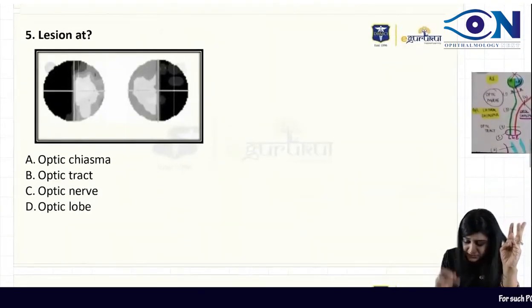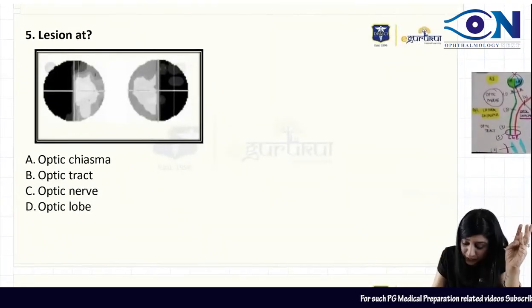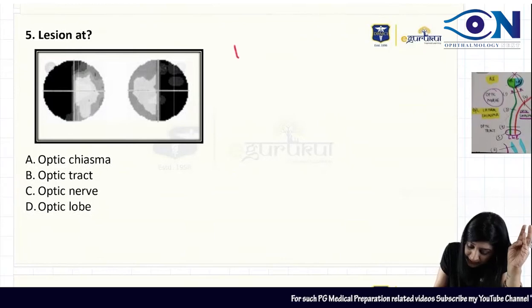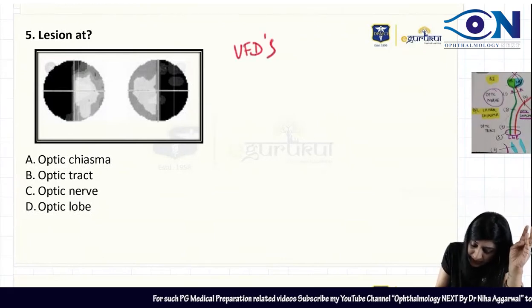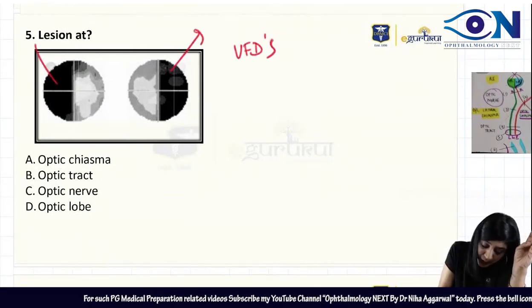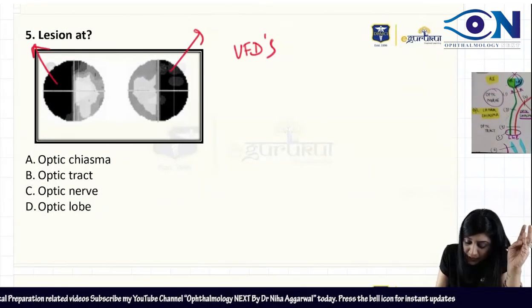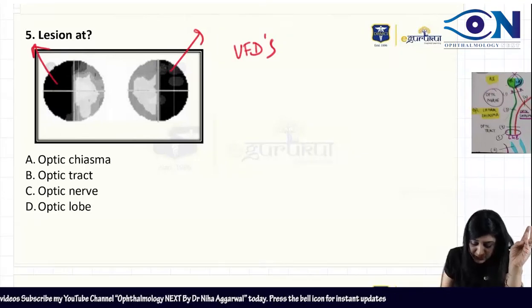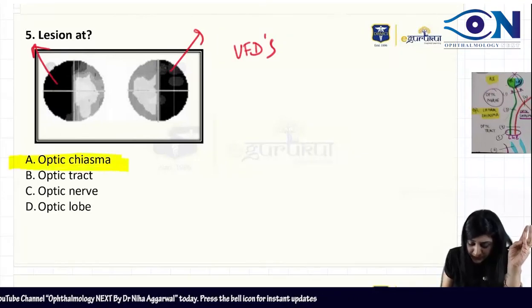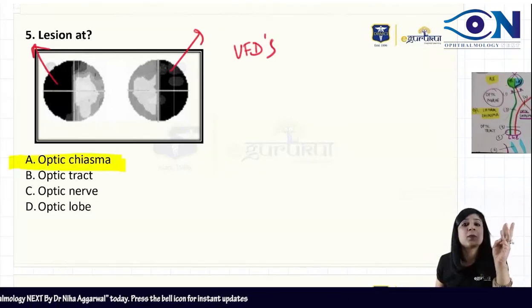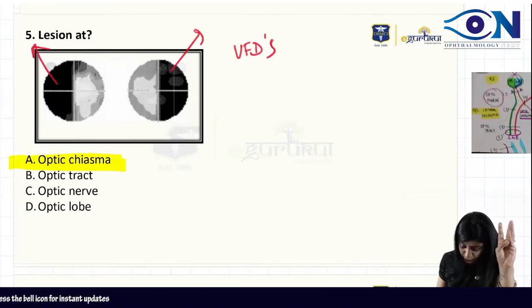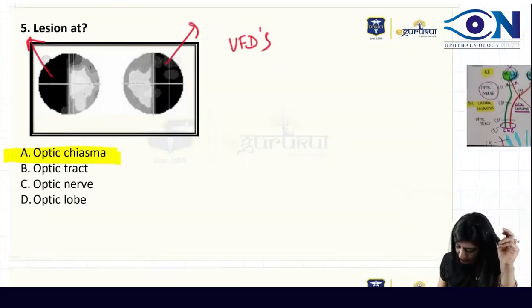We have done visual field defects. The bi-temporal defect you will get in cases of optic chiasma where the nasal fibers are affected. This we have also done.